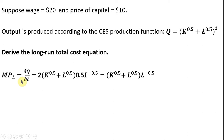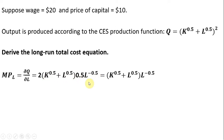I will start by taking two partial derivatives to get the marginal product of labor and the marginal product of capital. Here's the marginal product of labor — I'm taking the partial derivative of the production function with respect to L. I bring down the 2 in front, and 2 minus 1 leaves what's in parentheses raised to the power of 1. Then looking inside parentheses, the partial derivative of L to the 0.5 power gives us the result multiplied through. Simplifying: 2 times 0.5 is just 1, so here is the marginal product of labor.